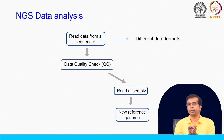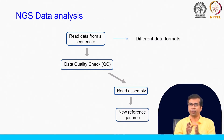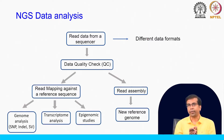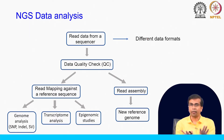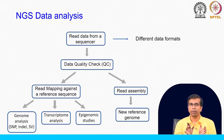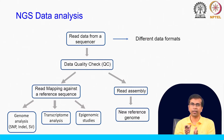Briefly, one path is the assembly path — read assembly. This is for new reference genomes. If you are sequencing a new genome or organism for which there is no genome data available, we do read assembly and get the new reference genome. In other cases where you have a reference genome already, we do something called read mapping against a reference sequence. These two steps are completely different and have their independent algorithms, which we will discuss in later classes.